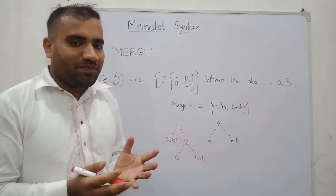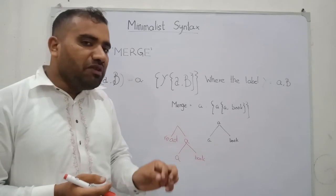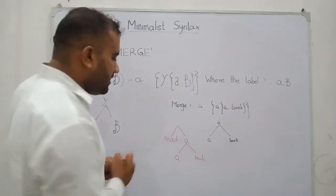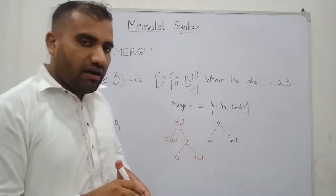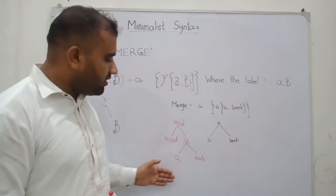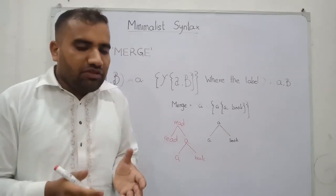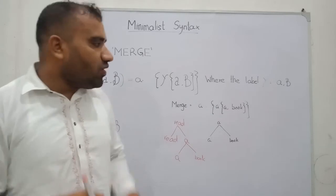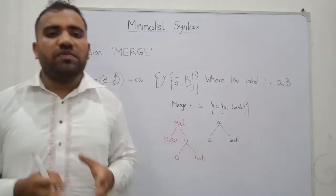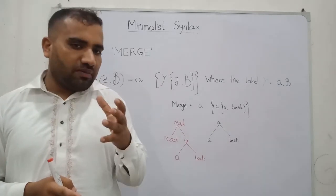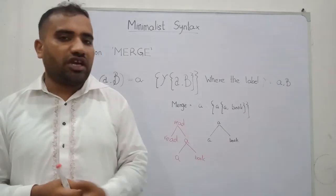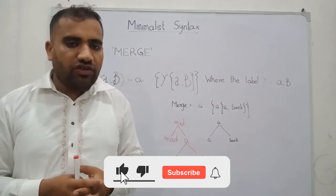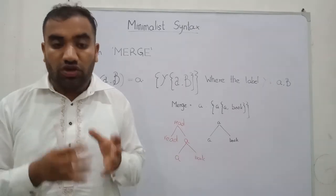The head becomes the label of that particular category. It is acting in that domain and it will become the head. In this way, our sentence becomes 'read a book,' and we can represent the hierarchical structure of our sentence. This is operation merge — a very basic operation you must understand if you are studying linguistics, especially syntax and modern syntax. After this, we will discuss the next operation, which is operation move.